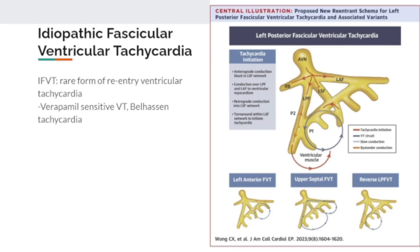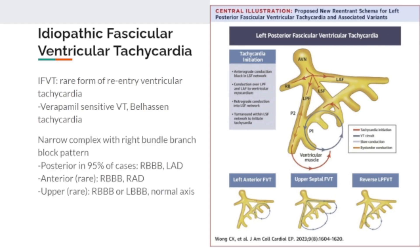This is a rare form of re-entry v-tach, sometimes called verapamil-sensitive or Belhassen tachycardia. 95% of cases are posterior with a right bundle branch block pattern, as is the case with our patient. The anterior variant has right axis deviation and the upper variant has a normal axis. Here is an illustration of fascicular ventricular tachycardia.